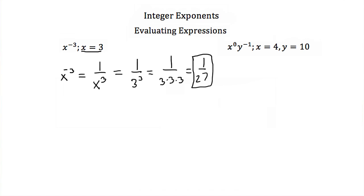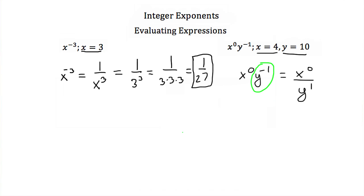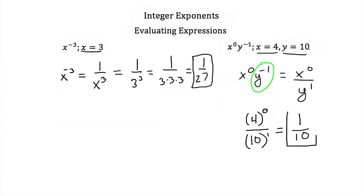Let's look at our next example. We have x to the zero times y to the minus 1, and we're told x equals 4 and y equals 10. We can rewrite that as x to the zero over y to the 1, because the negative exponent means that term goes in the denominator. Plugging in x equals 4 and y equals 10, we get 4 to the zero power over 10 to the first power. Now 10 to the first power is just 10, and 4 to the zero — any number other than zero to the zero power — is just 1. So this expression simplifies to 1 tenth.